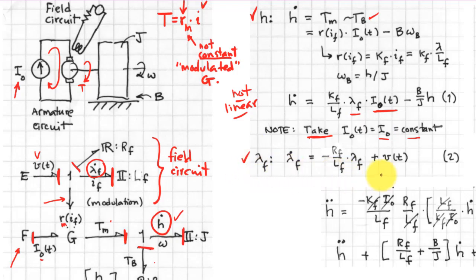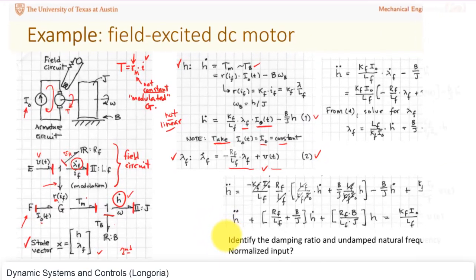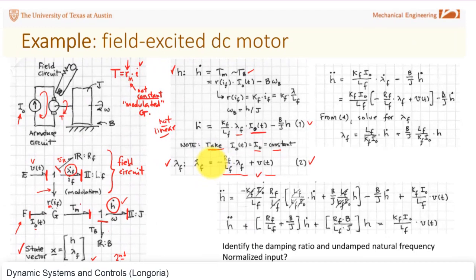Now the equation for lambda f comes from this bond graph here. It's very simple. Lambda dot is V minus the voltage across the resistor, and you get this equation here. So you have equation one, equation two. Now we've got the state equations. Let's convert that into second order form. I take this equation, the first one, differentiate it once. H double dot. So now I'm going to get a derivative of lambda dot. Note that I naught here is a parameter now, and H dot is differentiated. Now where do I get this lambda dot f? Well, that's my second equation. Substitute that in there.